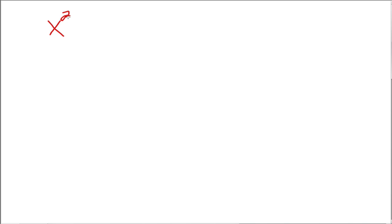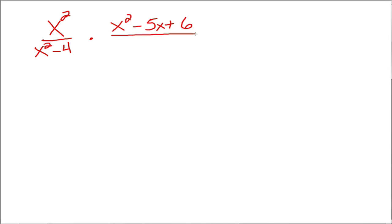So let's start with this one: x squared divided by x squared minus 4, and we're going to multiply that times x squared minus 5x plus 6, over x divided by x squared minus 3x. Those are the two rational expressions we're multiplying together.